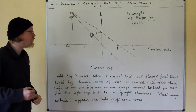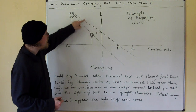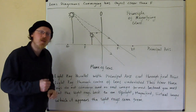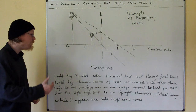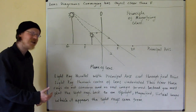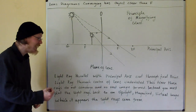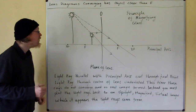What you have to do instead is to take these light rays back, plot them back to an upright magnified virtual image, which it appears the light rays come from.